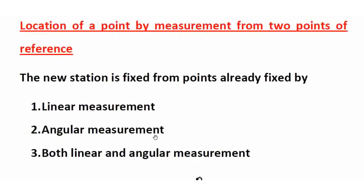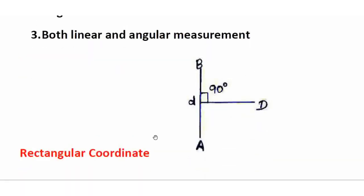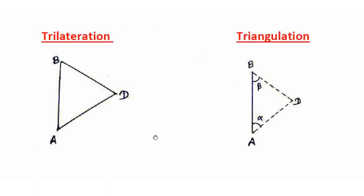We will fix the first case: the rectangular coordinate system. In the diagram, we fix a new point. We fix reference points A and B, then fix the new point using a perpendicular offset. We use a cross-staff or tape. Using a protractor with the angle, we fix the point by the horizontal angle and length. This shows the first case of the rectangular coordinate system.